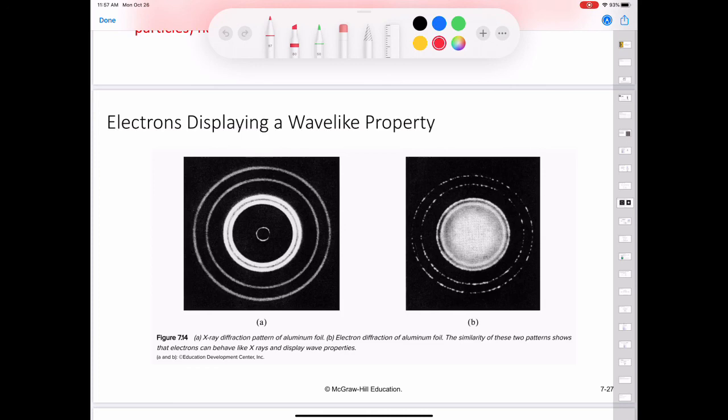In A, we see the diffraction pattern for x-rays that are passing through some aluminum foil. Electrons, which were originally thought to have only particle-like behavior, diffract exactly the same way as the x-rays do through the aluminum foil, demonstrating a similar pattern, which demonstrates that electrons can behave like x-rays and display wave properties.